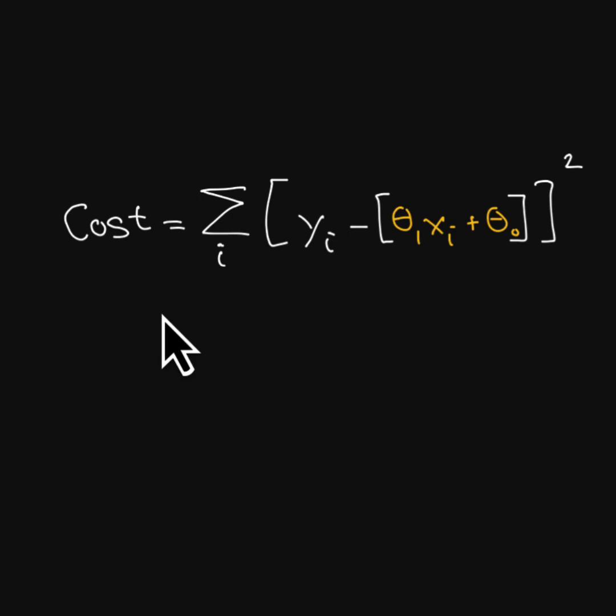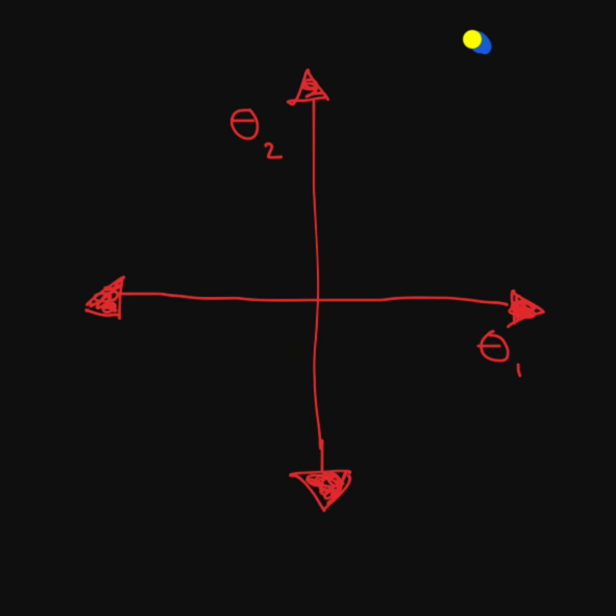We can curb this with a penalty term in the form of either ridge or lasso. Theta 1 and theta 2 are some learned parameters of a model. And let's say that the values that lead to the lowest mean squared error is some very high value of theta 1 and theta 2. This is indicative of overfitting.